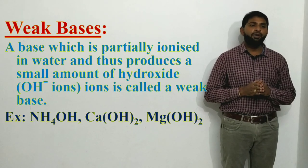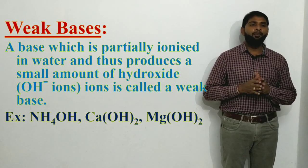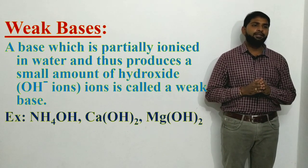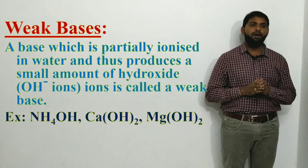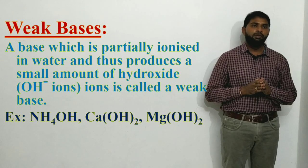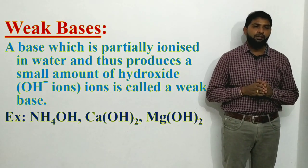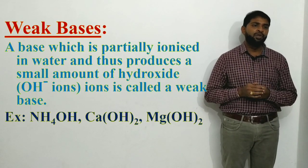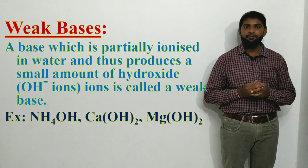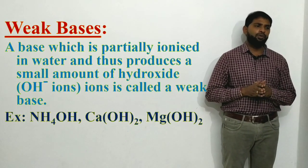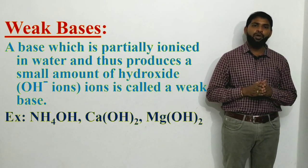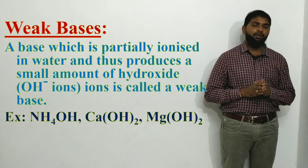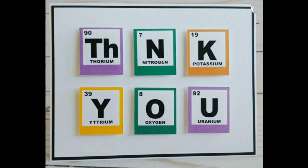A weak base is a base which is partially ionized in water and thus produces a small amount of hydroxide ions. When added to water, a weak base undergoes partial — not 100% — ionization to give OH⁻ ions. Examples of weak bases include ammonium hydroxide (NH4OH), calcium hydroxide Ca(OH)2, and magnesium hydroxide Mg(OH)2. Thank you for watching this video.